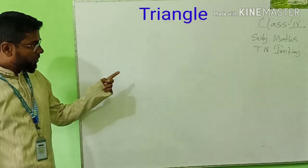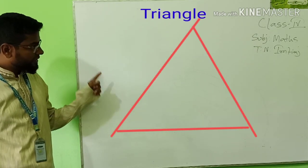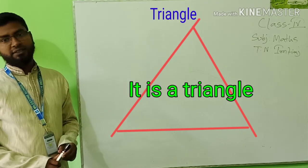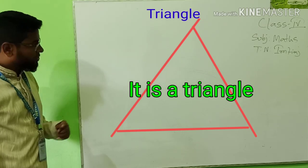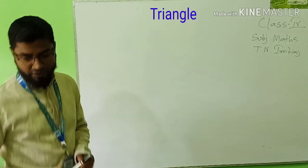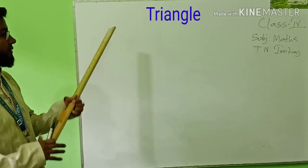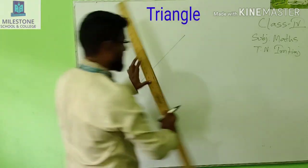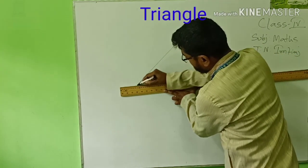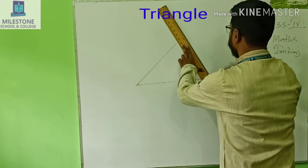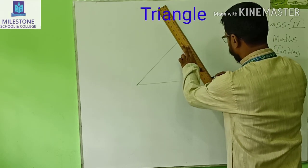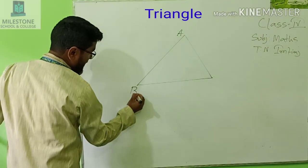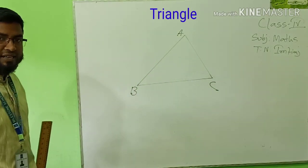See — one side, another side, another side — three sides. These three sides make a figure. It is a triangle. So we can draw a triangle like this. One line segment, another line segment, and make a triangle. Now we can label the points A, B, C. This is a triangle.